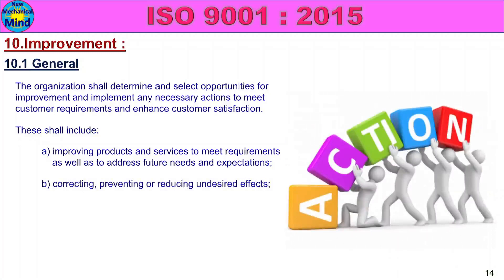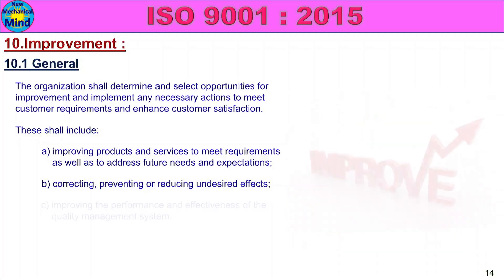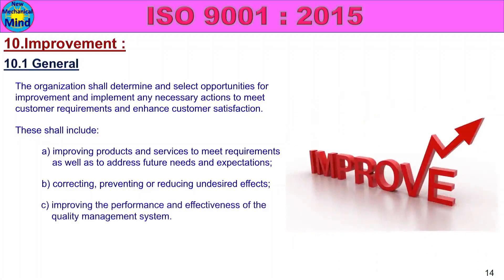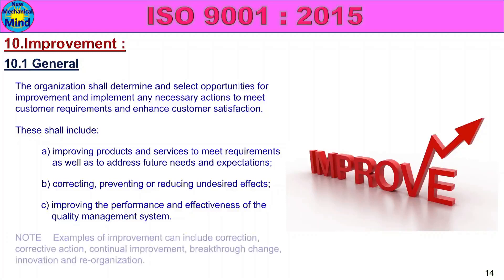Correcting, preventing or reducing undesired effects. Improving the performance and effectiveness of the quality management system. Note: examples of improvement can include corrections, continual improvement, breakthrough change, innovation, and reorganization.